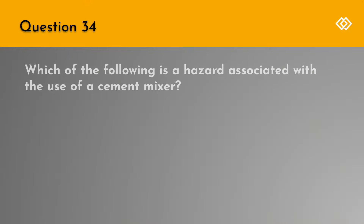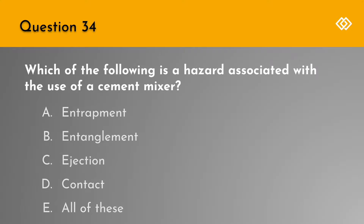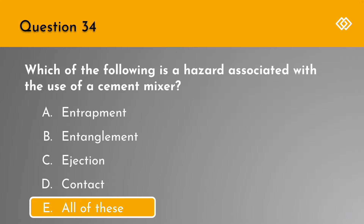Question 34. Which of the following is a hazard associated with the use of a cement mixer? A. Entrapment. B. Entanglement. C. Ejection. D. Contact. Or E. All of these. The correct answer is E. All of these.